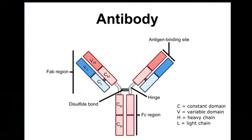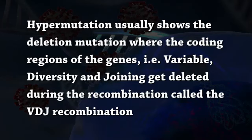D, development of antibodies by VDJ recombination. As mentioned, the antibody has a variable and a constant region. The transcription process and other recombination events in the coding regions of the genes are responsible for variation, leading to a variety of variable regions in different antibodies. Somatic hypermutations and antibody class switching are more prevalent in the variable region. Hypermutations usually show deletion mutation where the coding regions — variable, diversity, and joining — get deleted during the recombination called VDJ recombination.